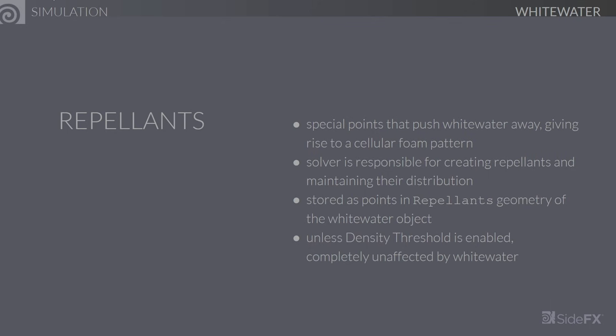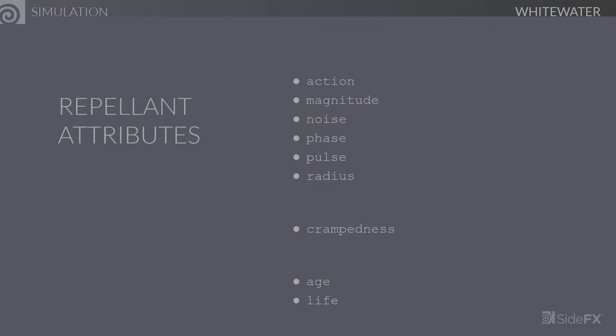Let's talk about repellents, which are special points that push nearby whitewater away, giving rise to the cellular foam pattern. The solver is responsible for creating these repellents and maintaining their distribution, performing necessary reseeding as it sees fit. The particles are stored as points in a separate geometry called the repellents of the whitewater object, and the artist is free to manipulate these in any way they'd like. Unless density threshold is enabled, they're completely unaffected by the whitewater, which is useful because you can temporarily turn off all particle emission to watch how the repellents evolve and get a nice idea of the cellular pattern you can expect.